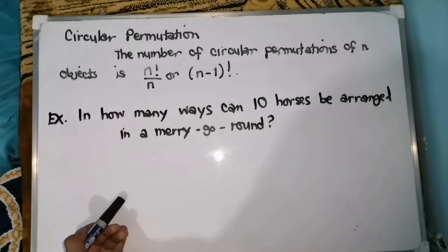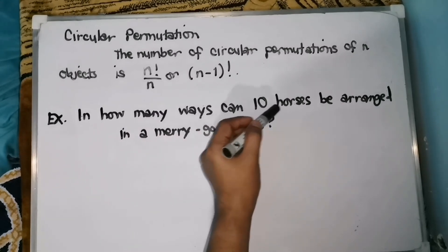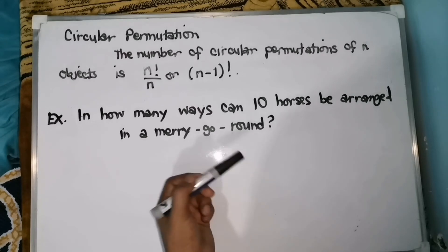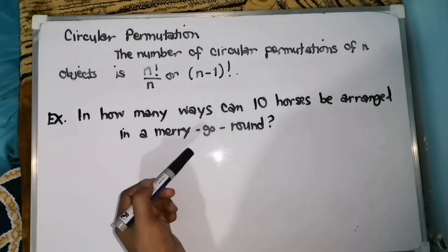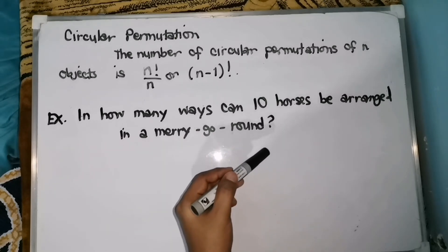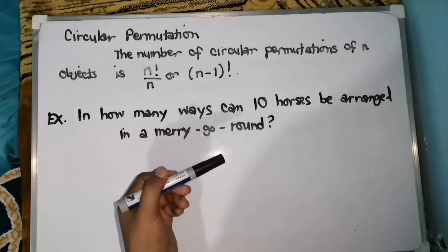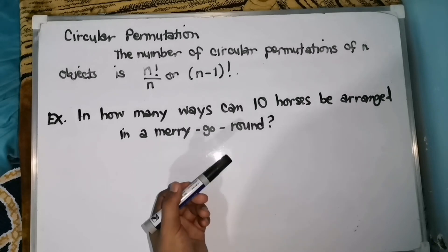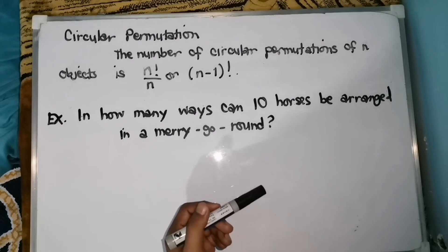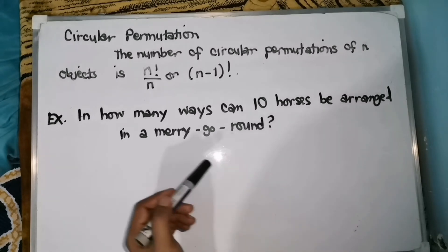For our last example, so here's our problem: In how many ways can 10 horses be arranged in a merry-go-round? Again, even though walang nabanggit na salitang circular permutation, so meron naman ditong keyword na merry-go-round. Alam ko na familiar kayo sa merry-go-round — ito ay makikita sa amusement park at ang arrangement ng horses doon ay circular. So, therefore, aalamin natin how many circular permutations are there when we are going to arrange 10 horses in a merry-go-round.